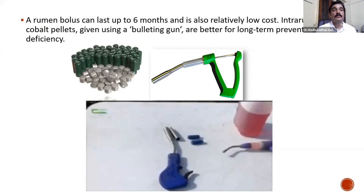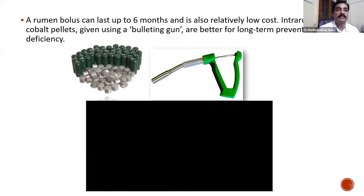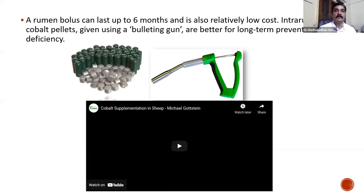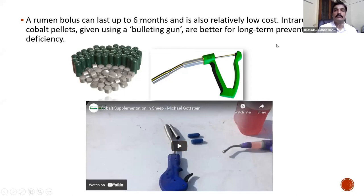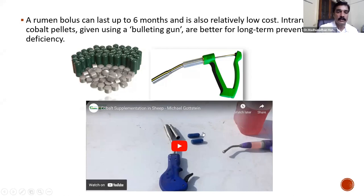A rumen bolus can last up to six months and is relatively low cost. Intra-ruminal cobalt pellets given using a bolus gun are better for long-term prevention of deficiency.